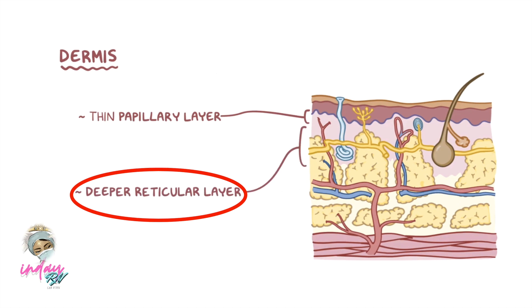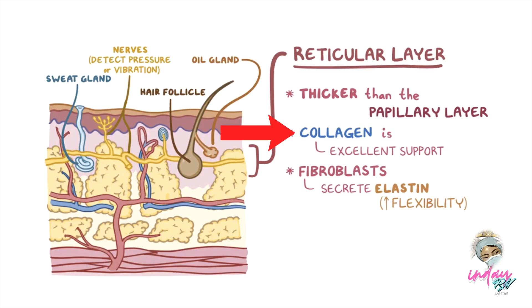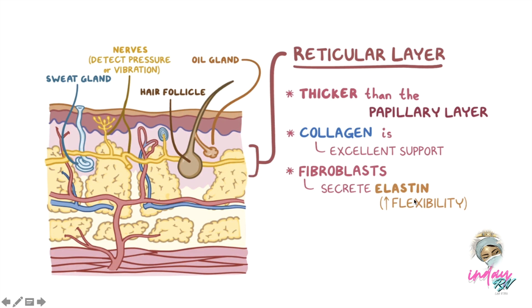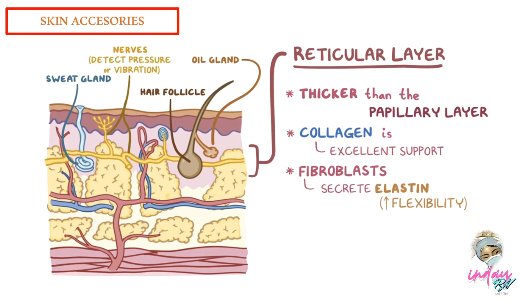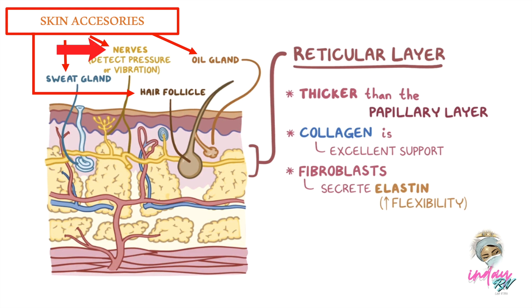The reticular layer of the dermis is thicker than the papillary layer. Its collagen is packed very tightly together, providing excellent tissue support. The fibroblasts in the reticular layer also secrete elastin, a stretchy protein that gives skin its flexibility. The reticular layer also contains the skin's accessory structures — oil and sweat glands, hair follicles, lymphatic vessels, nerves, and blood vessels. Nerve endings here detect pressure and vibration.